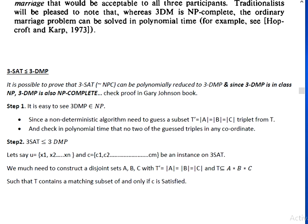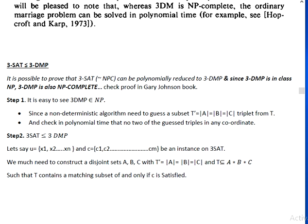Now the last question I would like to discuss is how can we show that the three-dimensional matching problem is NP-complete. First of all, we can easily say that the three-dimensional matching problem is in NP class because there is a non-deterministic algorithm. We need to guess only a subset T prime which has cardinality |A| = |B| = |C|, the triplet from a subset T from the cross product of A×B×C, and we can check this in polynomial time that no two of the guessed triples share any coordinate.